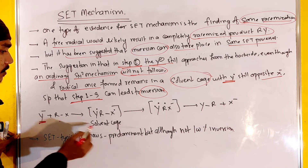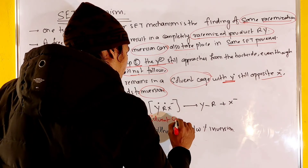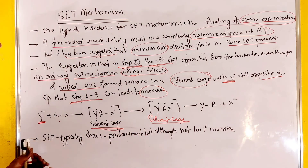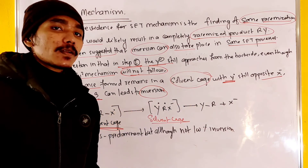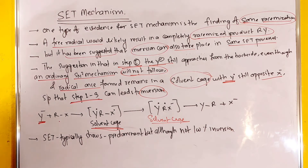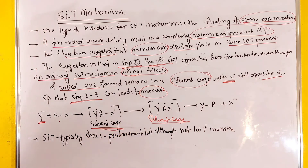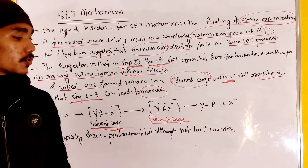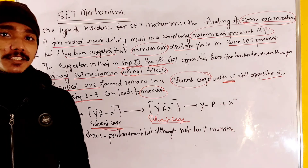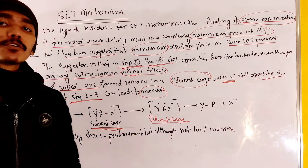So if we use the R-X, we have a solvent cage and formation of X minus. Finally, we have a solution — R-Y product is formed. In this mechanism we have predominantly inversion, but not 100% inversion. Inversion predominates, but we also have some retention. So inversion is predominant — not absolutely 100%.